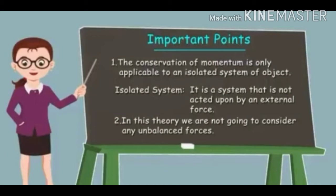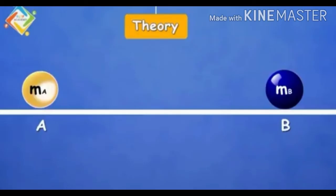Now you have to understand what is an isolated system. It is a system that is not acted upon by an external force. That means the object should not be disturbed by any external unbalanced force. In this theory we are not going to consider any unbalanced force. To prove this, we have the following theory.